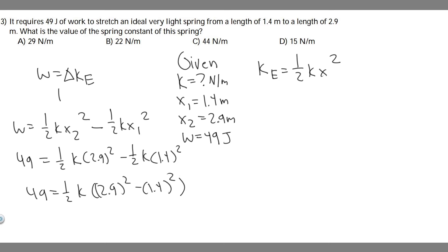And so if we want to solve for k, we can multiply both sides by 2. So multiply both sides by 2, and then we're going to divide by this right here, so 2.9 squared minus 1.4 squared.